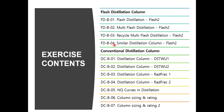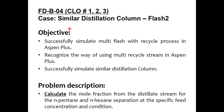Activity number four is related to a similar distillation column. This activity is related to CLO number one, which covers the basics and fundamentals of this course. CLO number two is related to the simulation of equipment — we are simulating a flash separator. And CLO number three is related to flow sheeting, which we are also doing in this process.